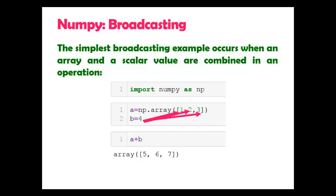We can think of the scalar B being stretched during operation into an array with the same shape as A. Here the stretching logic is only conceptual. NumPy is smart enough to use the original scalar value without actually making copies.